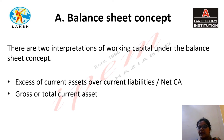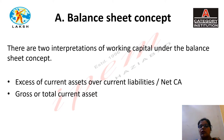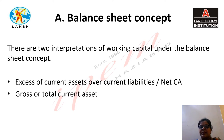Let's understand the balance sheet concept of working capital. There are two interpretations under this concept. First is excess of current assets over current liabilities, or in other words, net current assets. Second is gross or total current assets. So through the balance sheet, we can calculate working capital in two ways: gross working capital, which is the total of current assets, and net working capital, which is excess of current assets over current liabilities.